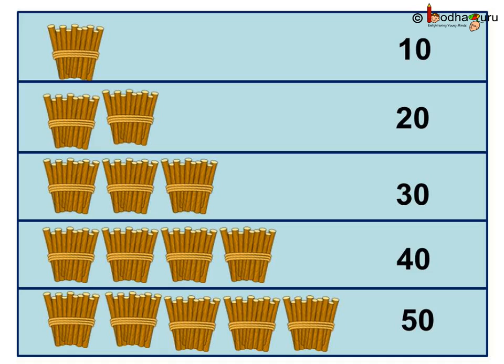So let us start counting till 100 quickly using the bundles of 10s. 1 ten is 10. 2 tens is equal to 20. 3 tens is equal to 30. 4 tens is equal to 40.